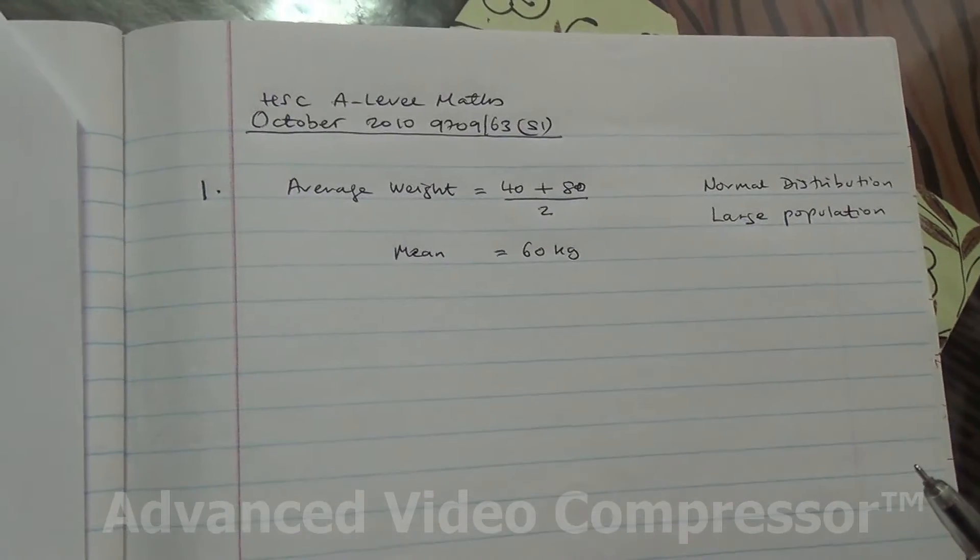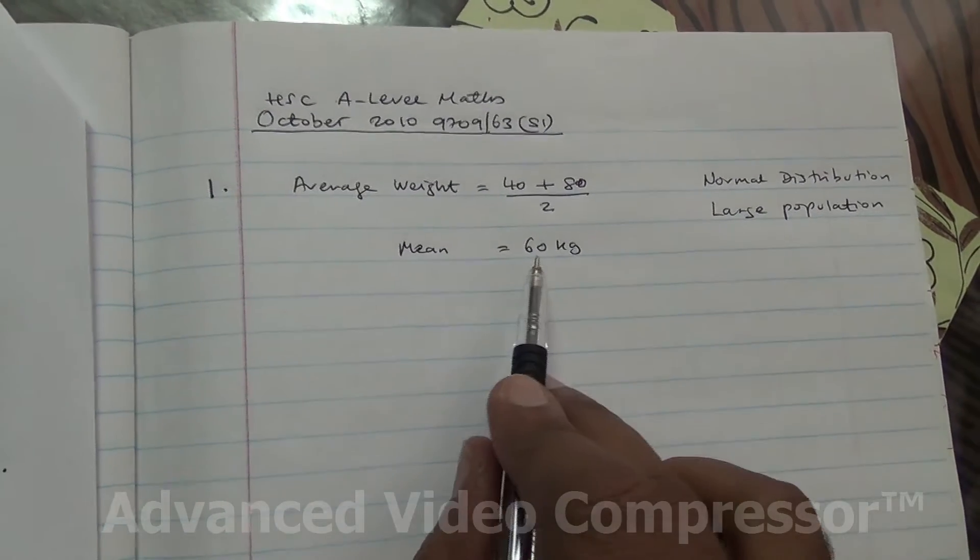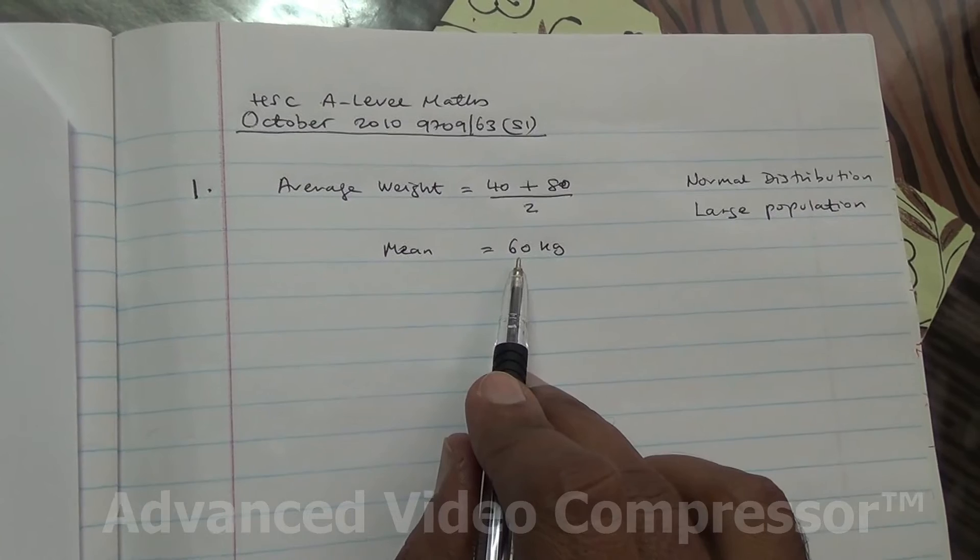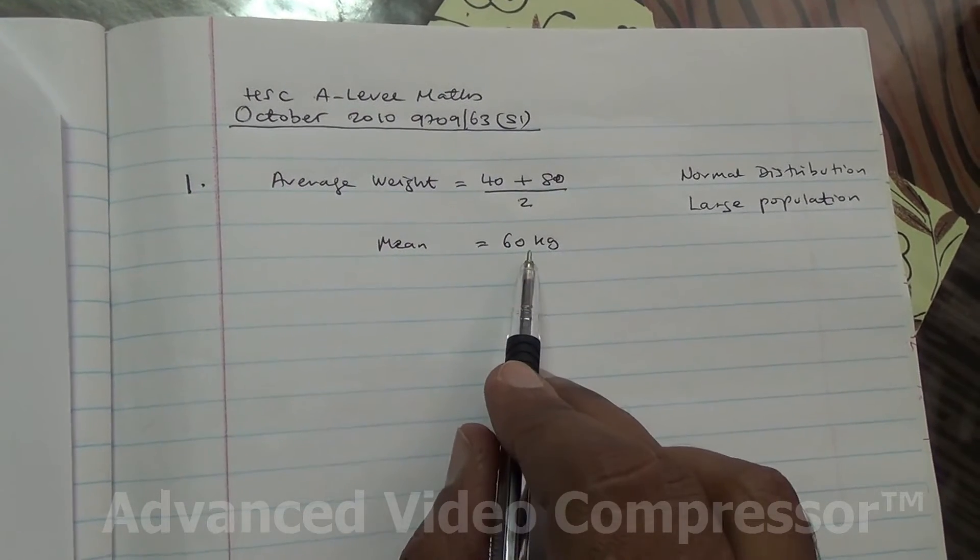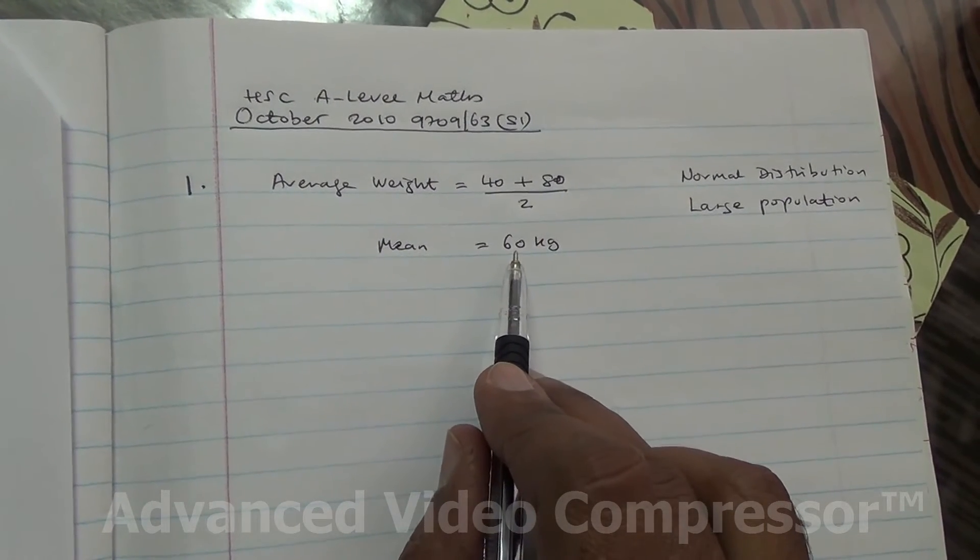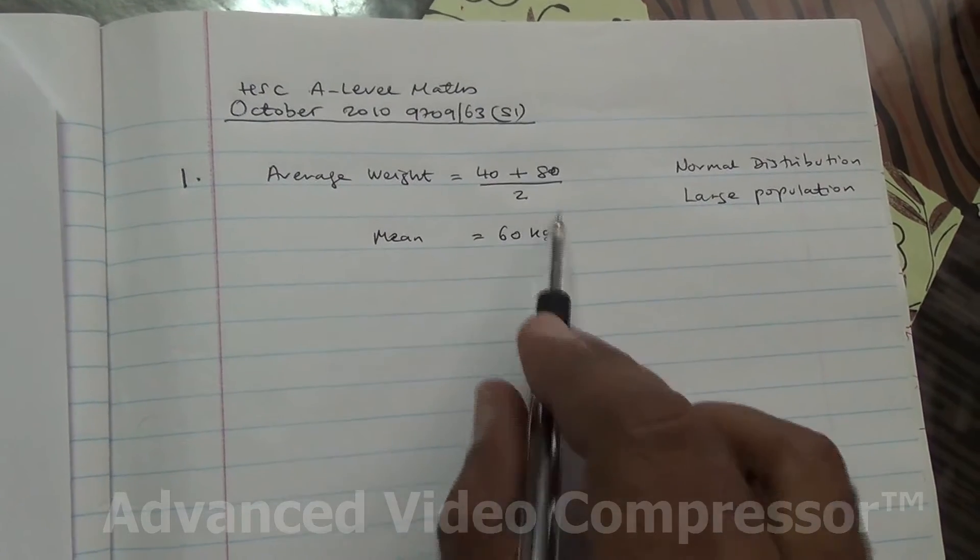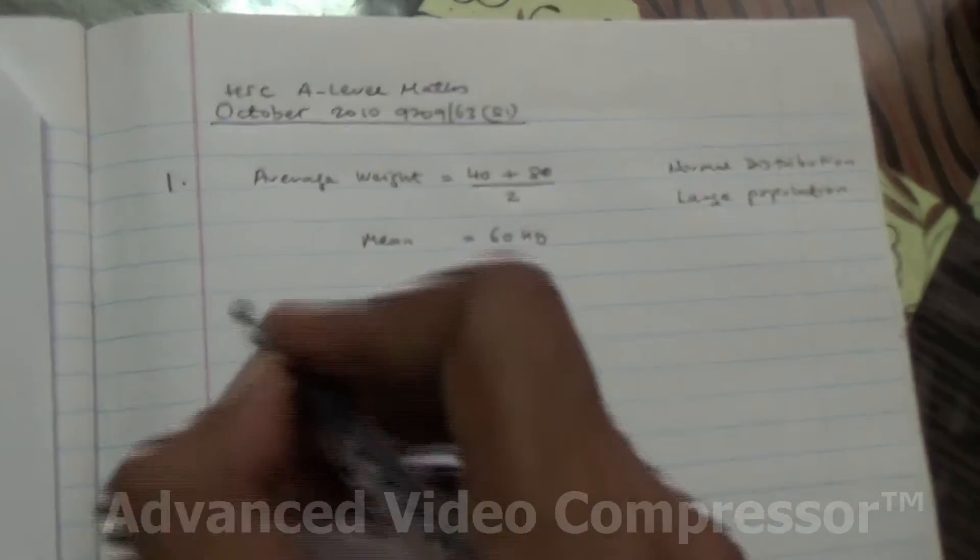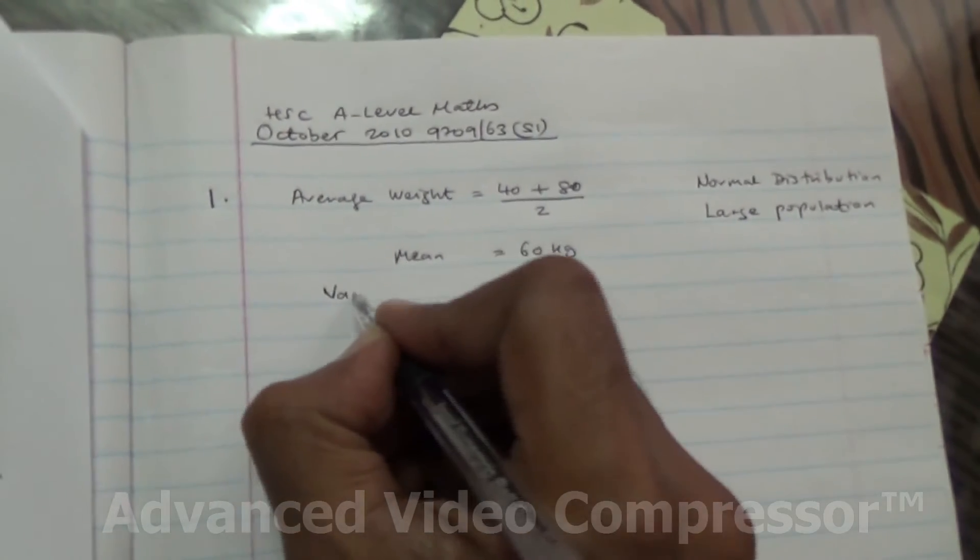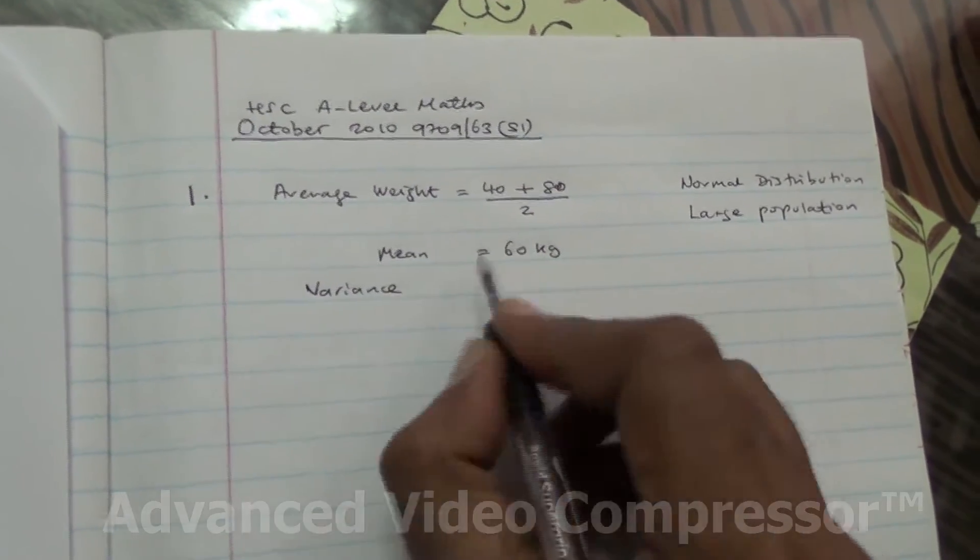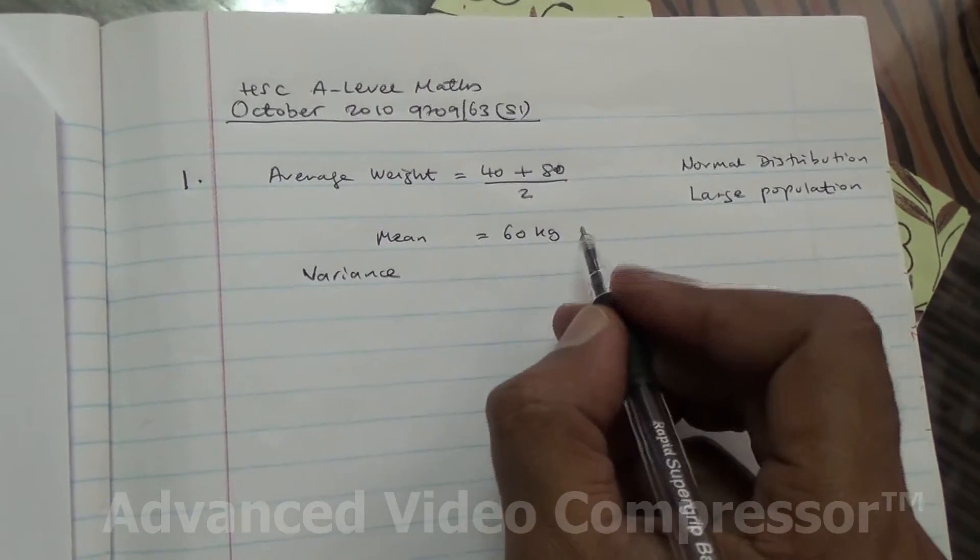Then also, what about the standard deviation? They can deviate like maybe 9 kilograms from 60, that is 9 kilograms below and above 60. So I would say that the variance, reasonably I'm saying, that would be 9 kgs.